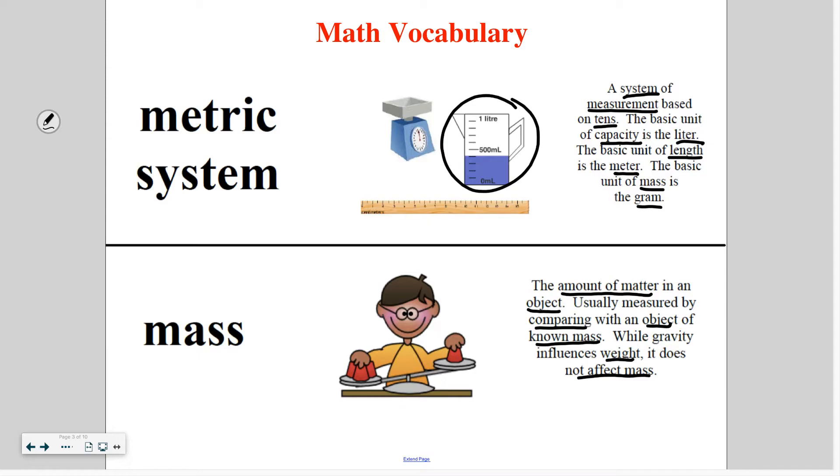mass is not affected by gravity. So for example, here on Earth, you may weigh 50 pounds. If you were to go to the moon, you'd weigh a little less because the gravity on the moon is not as strong as it is on Earth. But your mass would not change.